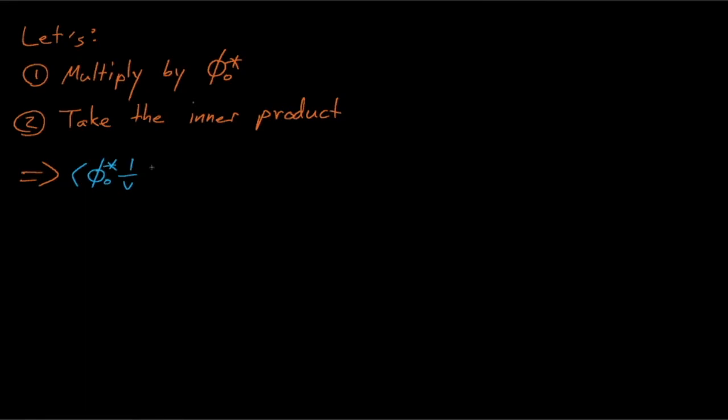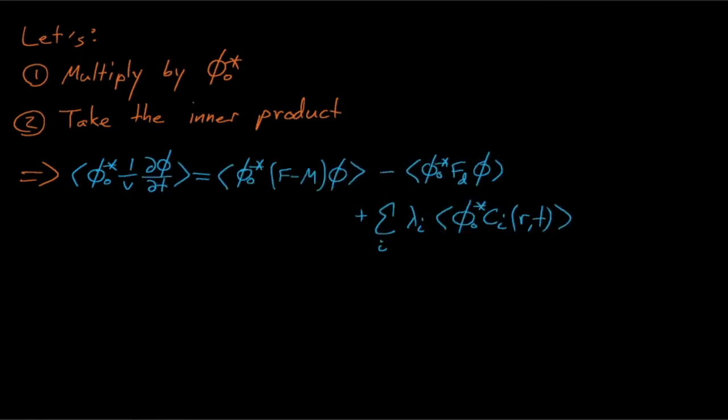From here, we will multiply both equations by the adjoint flux for the initial unperturbed system and then take the inner product of both equations. Note that the adjoint flux here is only the adjoint for the initial unperturbed system and that the forward flux, the Boltzmann transport equation operators, and several other terms are actually time-dependent in these equations.